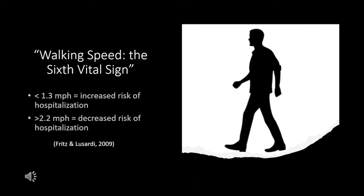According to walking speed, the sixth vital sign, an average of less than 1.3 miles per hour indicates an increased risk of hospitalization. Moreover, an average of above 2.2 miles per hour equals a decreased risk of hospitalization.